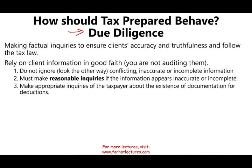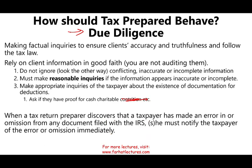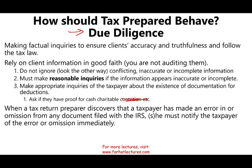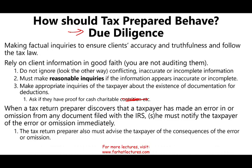Simply ask the appropriate questions about the existence of documentation. Ask them if they have any proof for the cash charitable contribution they are claiming. As long as they say yes and there's no reason to believe otherwise, you're good. Also, when you discover that a taxpayer made an error or an omission from any document filed with the IRS, you must let them know about the error or omission immediately and inform them of the consequences. This is consistent with what we discussed in Circular 230.